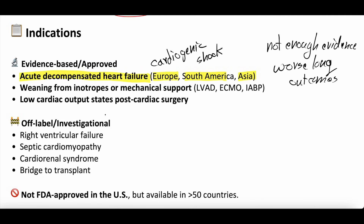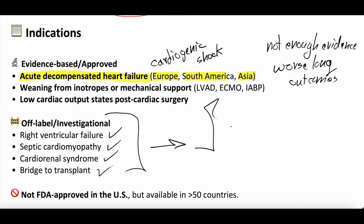Levosimendan is being investigated for right ventricular failure, septic cardiomyopathy, cardiorenal syndrome, and bridge to transplant — all similar to cardiogenic shock and acute decompensated heart failure indications. It is not FDA approved in the United States, although it is available in more than 50 other countries.